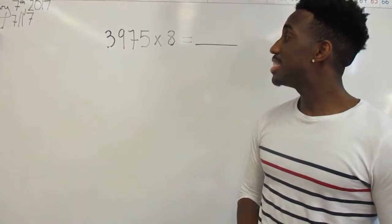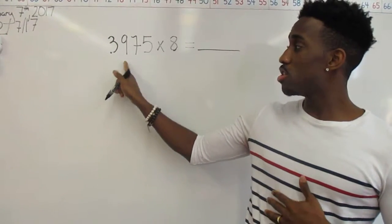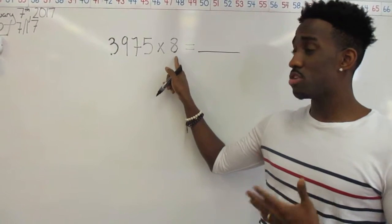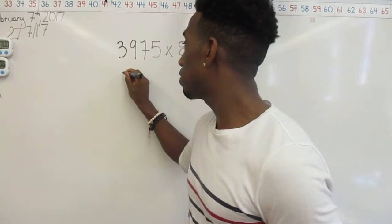All right, so right now I'm going to show you guys how we can solve a four-digit number multiplied by a one-digit number using what we call the area model for multiplication.